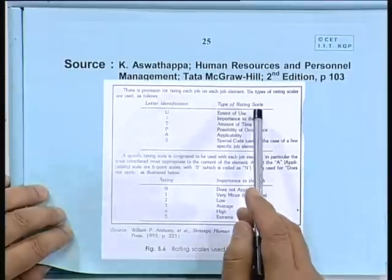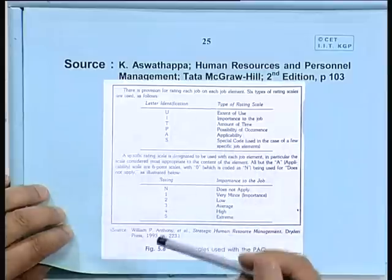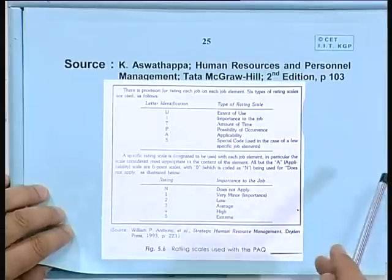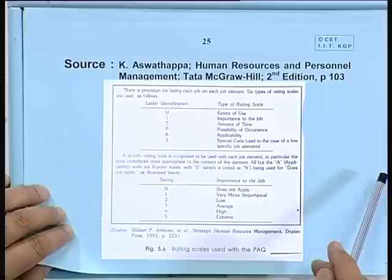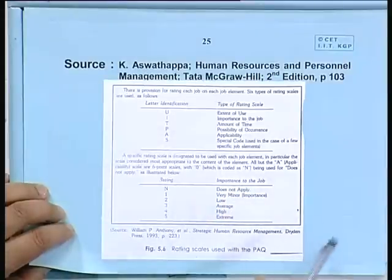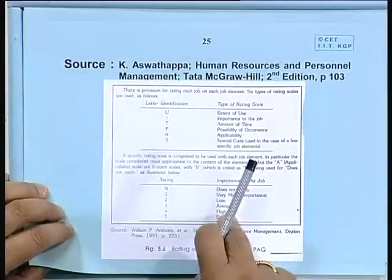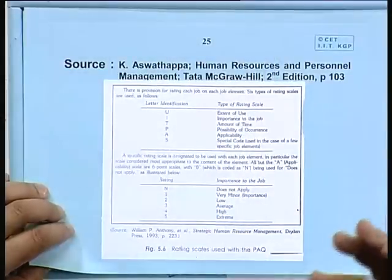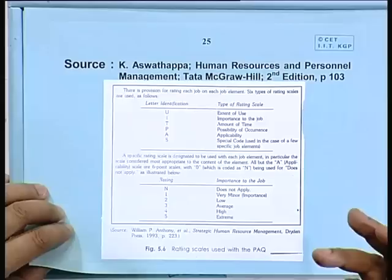The type of rating scale is the extent of use of that element. You are analyzing a job — PAQ has 194 elements. For the job you are studying, say an assembly job, you look at all these elements and rate the extent of use — is it 1, is it 0, maybe it is not applicable. This, in conjunction with the rating scale, makes a powerful tool — PAQ — for doing a job rating exercise.